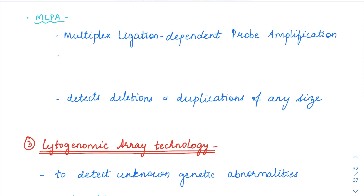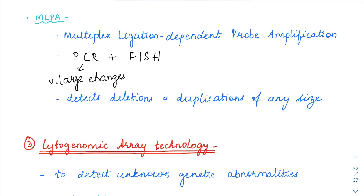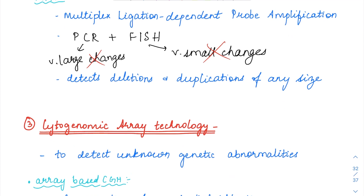Then we have MLPA — multiplex ligation-dependent probe amplification. This is basically a combination of both PCR and FISH techniques. In PCR, very large changes like large deletions, duplications, and chromosomal translocations were not able to be detected. And in FISH, very small changes will not be detected. But MLPA combines both techniques, so we can detect both large defects and smaller defects — any size defects, duplications, deletions, anything can be found with MLPA.